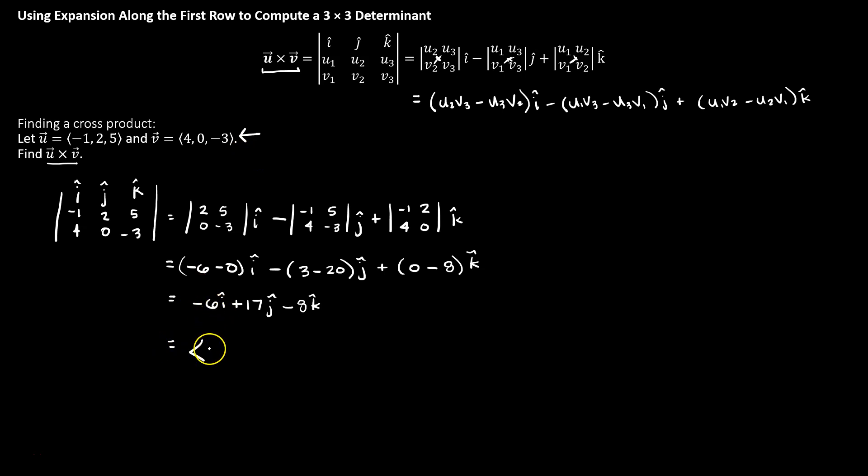The original problem was written in component form, let's go ahead and switch it back. So -6i means -6 goes in the x component, 17j says 17 goes here, and then -8k says -8 goes in the last component. And that would be our cross product.